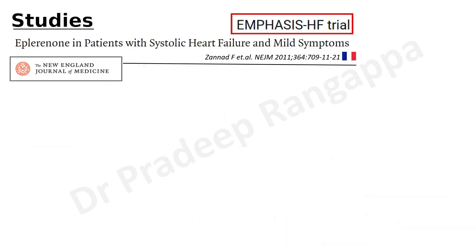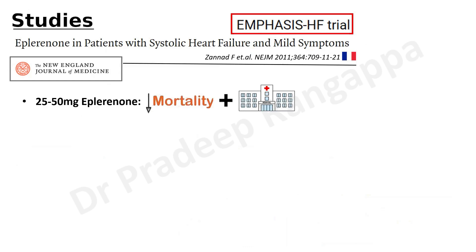The EMPHASIS heart failure trial, published in NEJM in 2011 by Zannad et al., examined eplerenone in patients with systolic heart failure and mild symptoms. Using 25 to 50 mg eplerenone, this study showed significant reduction in both mortality and hospitalization. Hyperkalemia occurred in 0.6% of patients but was statistically non-significant in this trial, so although it can occur, it did not attain statistical significance.